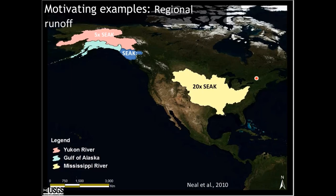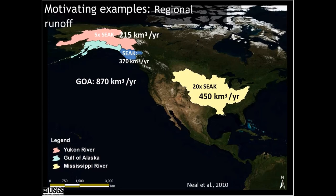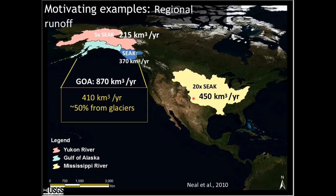A second motivating example is regional runoff. Aaron with Ed Neal spearheaded a study that came out in 2010 in GRL on the importance of glaciers in regional runoff. These numbers show several different large drainage basins. Comparing southeast Alaska to the Yukon — the Yukon is about five times larger, the Mississippi River about 20 times larger in aerial extent. But 370 cubic kilometers per year of runoff from southeast Alaska is in excess of the Yukon and close to the Mississippi River, even though the areas are much smaller. Gulf of Alaska-wide, it's about 870 cubic kilometers per year of runoff, and about half of that is coming from the glaciers.